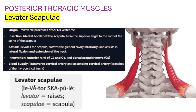The next posterior thoracic muscle is Levator scapulae. Levator means to raise; scapulae means scapula. Origin: transverse processes of C1–C4. Insertion: medial border of the scapula from the superior angle to the root of the spine of the scapula. Action: elevates the scapula, rotates the glenoid cavity inferiorly, and assists in lateral flexion and extension of the neck.